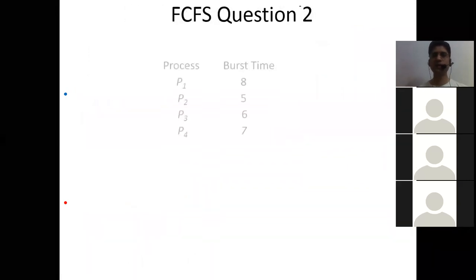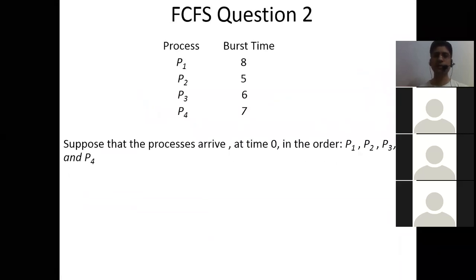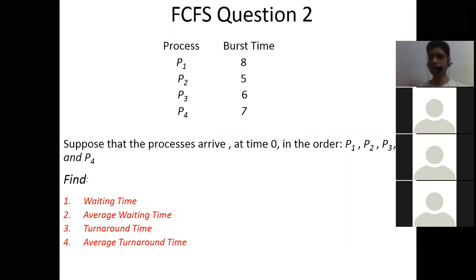Let's start the next question. We have four processes with burst times: P1=8, P2=5, P3=6, P4=7. All processes arrive at time zero. Calculate waiting time, average waiting time, turnaround time, and average turnaround time.